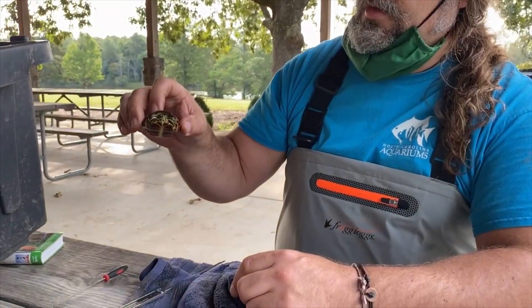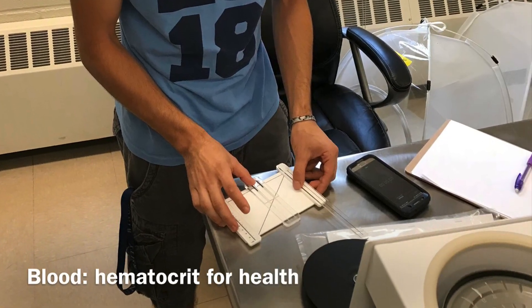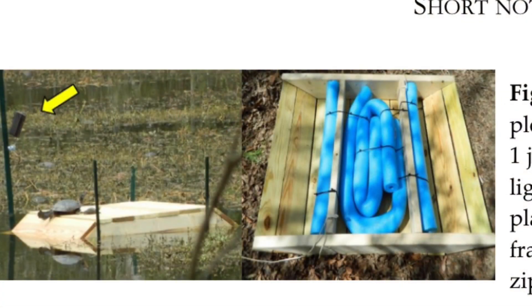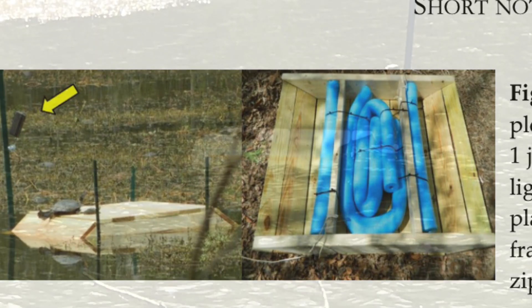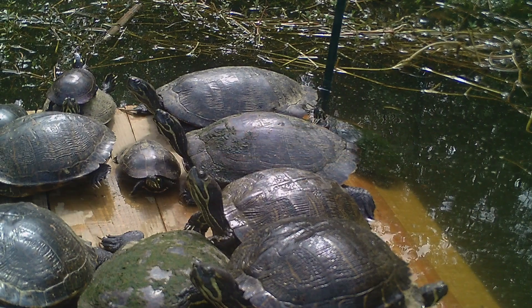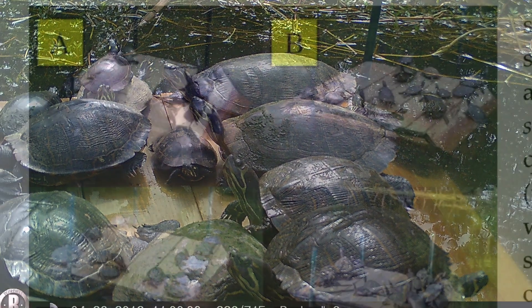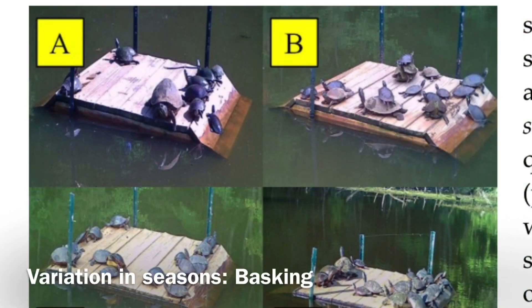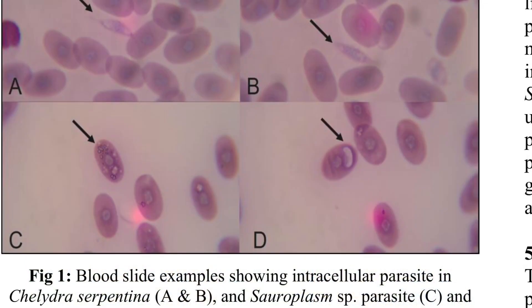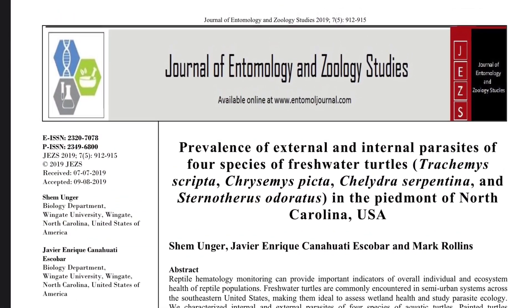We've been monitoring turtles at Wingate Lake for a number of years, looking at their blood — including hematocrit values — as overall indicators of health and stress. We've also applied a number of artificial basking platforms around the lake and use trail cameras to count turtles using those platforms. You can see in some areas there are a lot of turtles basking on these platforms, and the numbers vary by season and sunlight. We've also been looking at internal blood parasites of different turtle species, and a number of these studies have been published in collaboration with undergraduates.